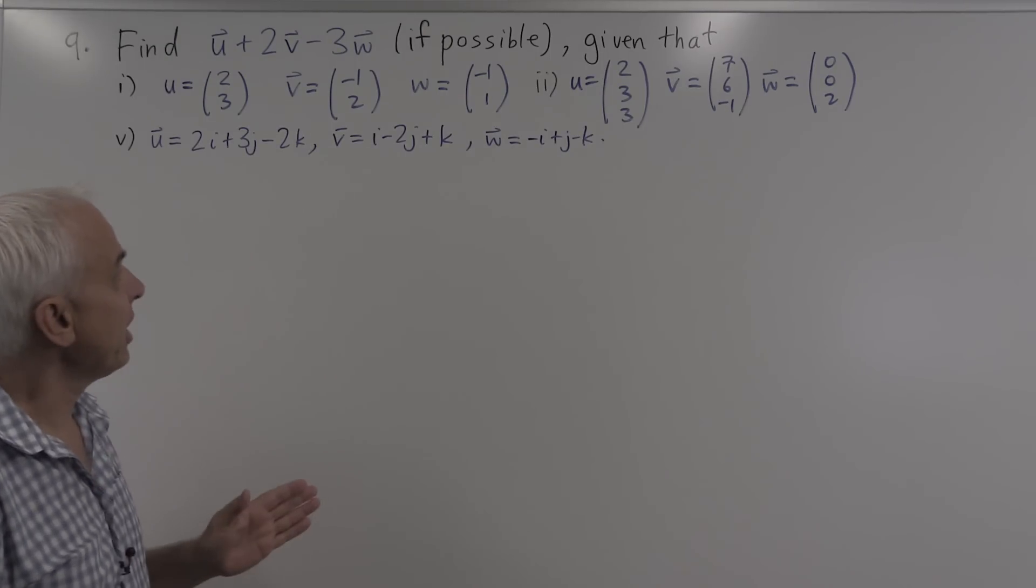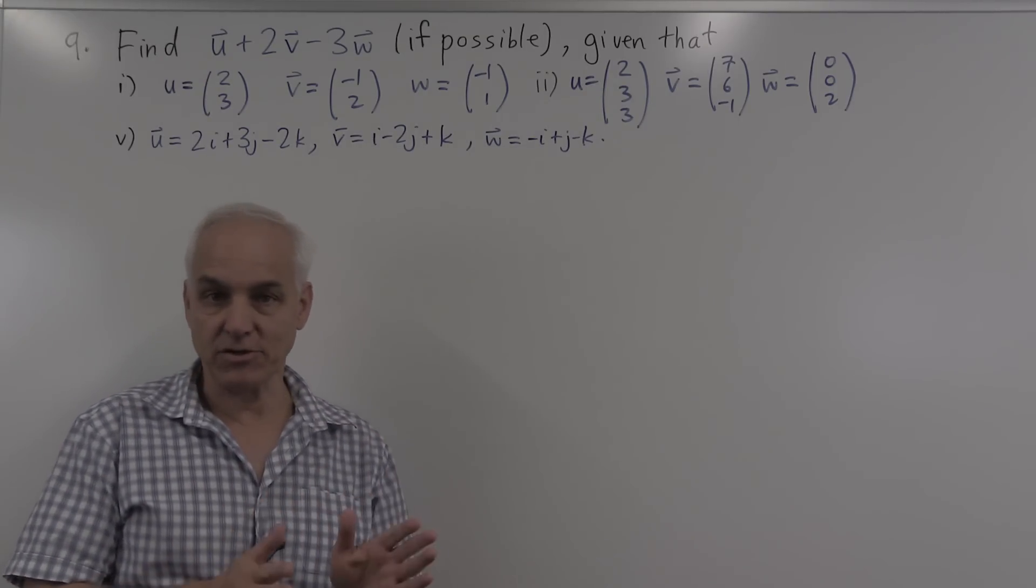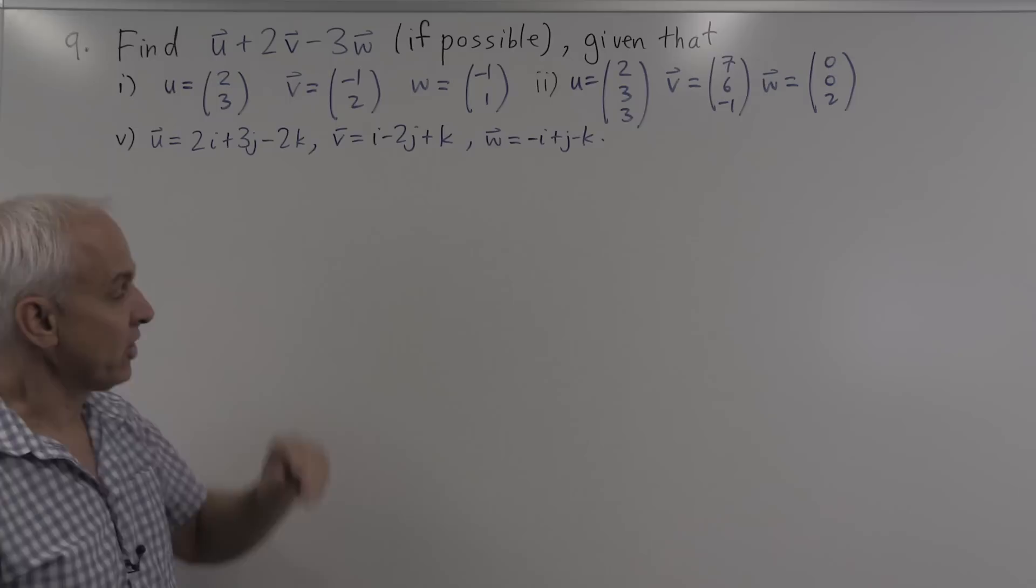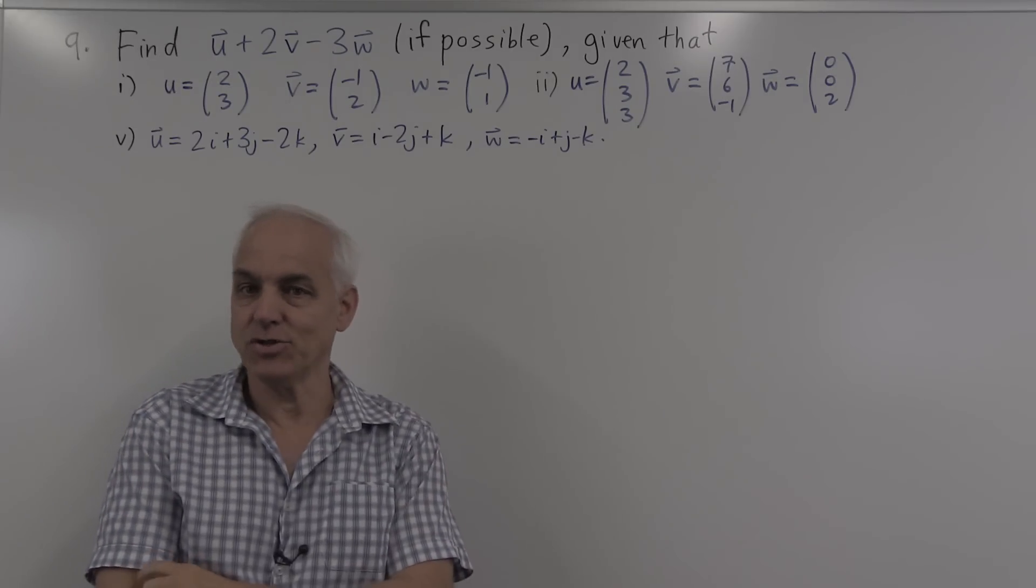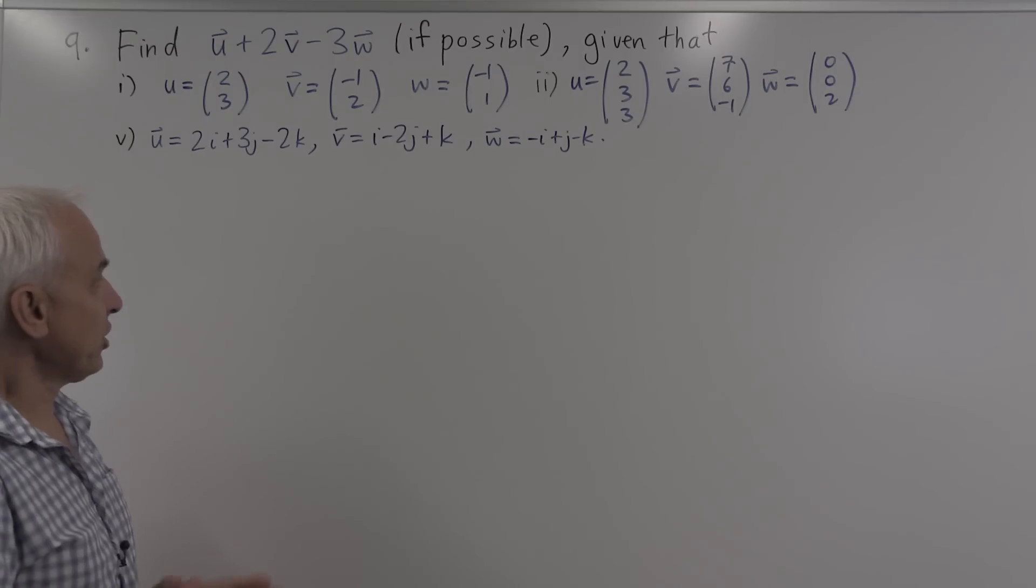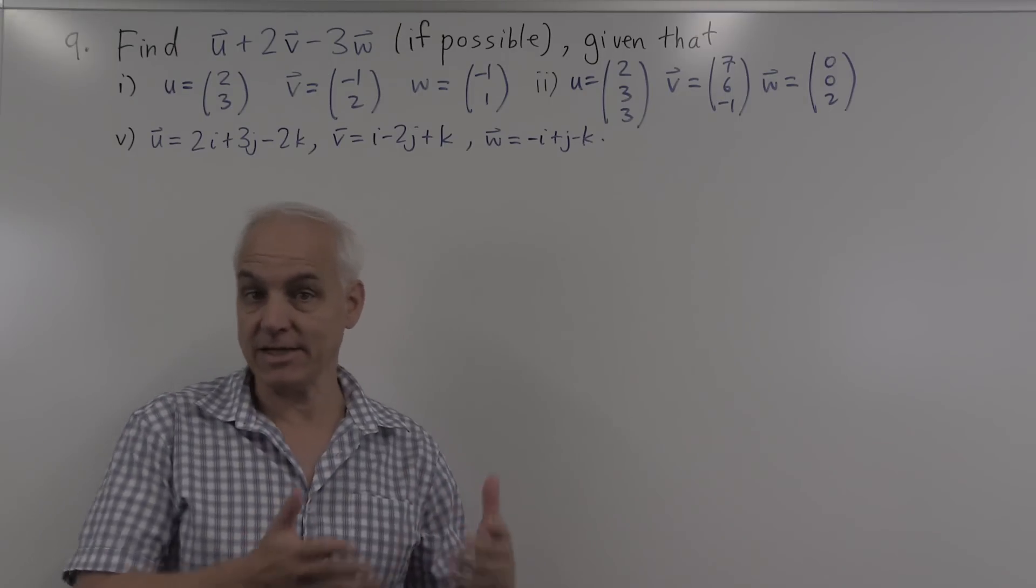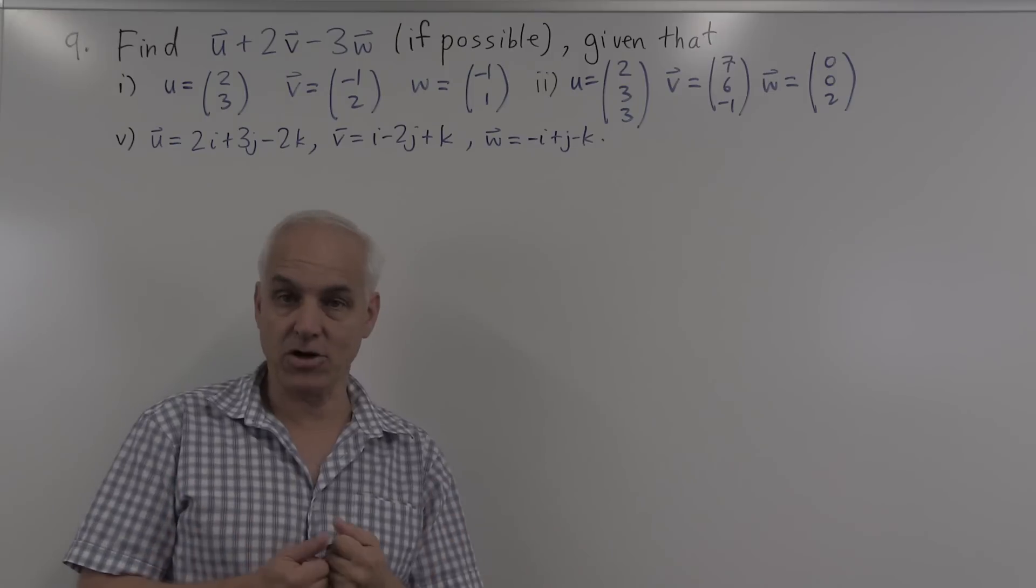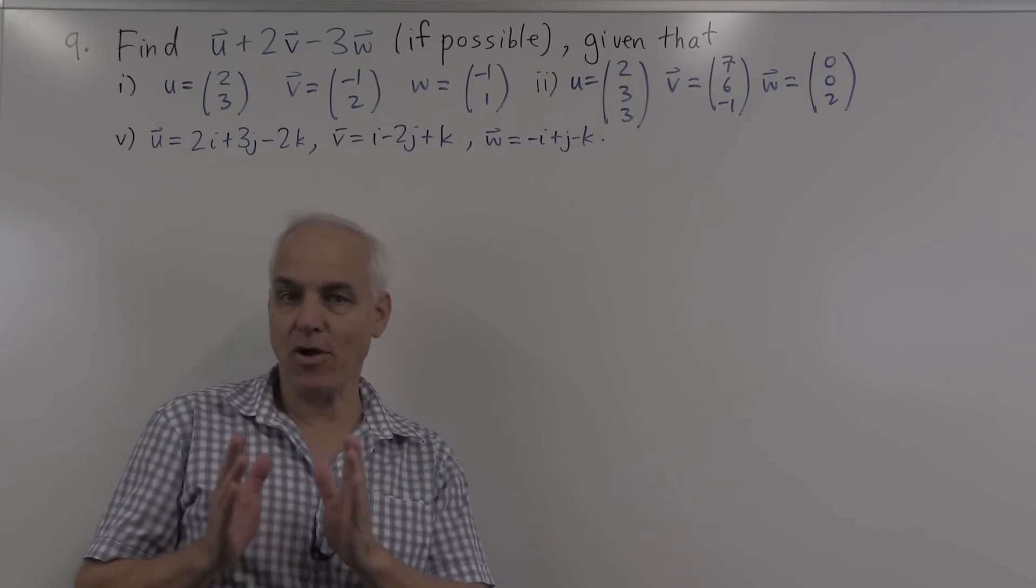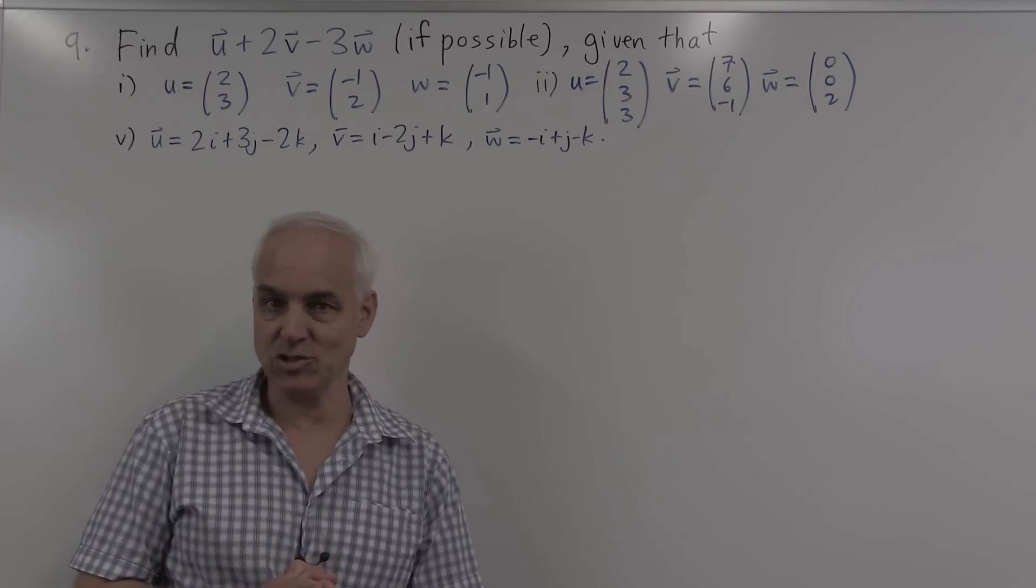So this is a question that gives us some practice in doing some arithmetic with vectors in two dimensions and in three dimensions, and in terms of an alternate formation using canonical basis vectors. It's going to give us a chance to also draw some diagrams because I like to illustrate what's going on when we're taking these linear combinations. So you see that it has an algebraic aspect, but there's also a geometrical or physical aspect which complements the algebraic one.